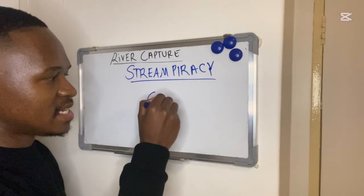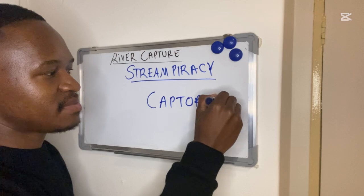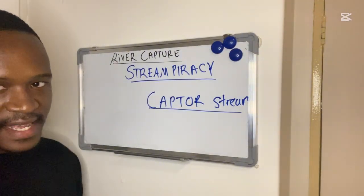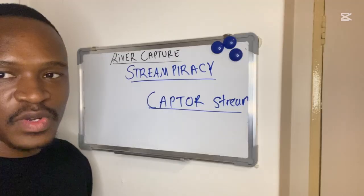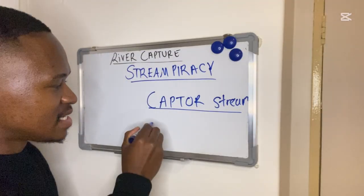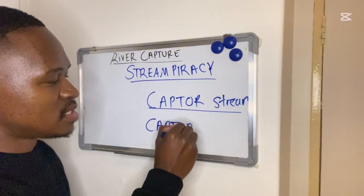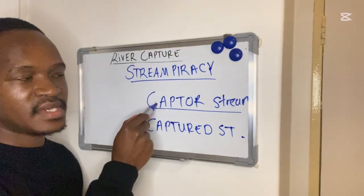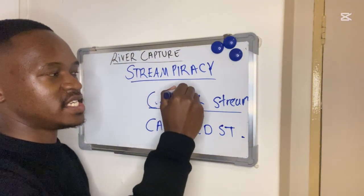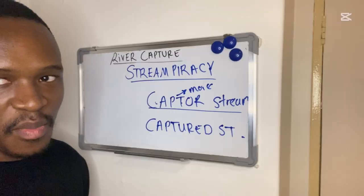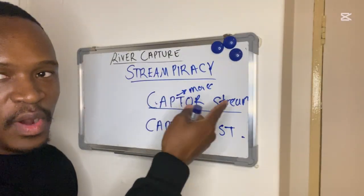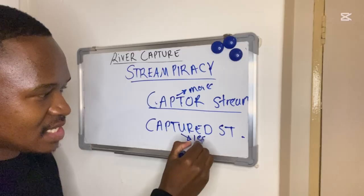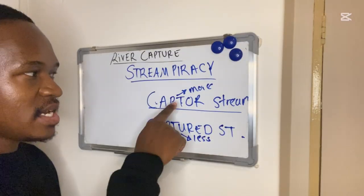The river which captures or robs the less energetic river is known as the captor stream. The less energetic river which is being robbed or captured is known as the captured stream. The captor stream is the more energetic one, while the captured stream is less energetic.